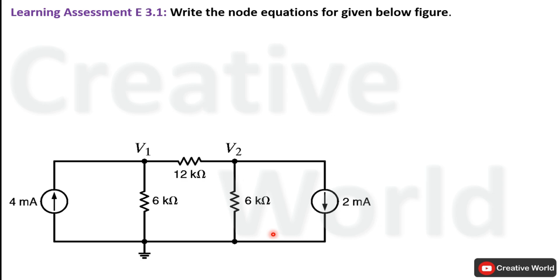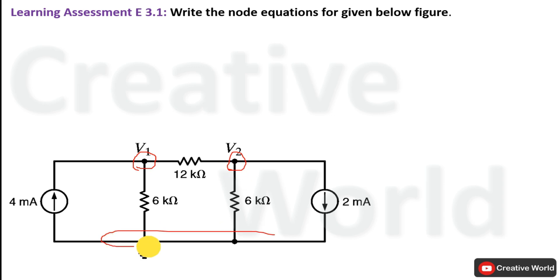Without wasting time let's proceed towards the solution. First of all, if we observe, this circuit contains 3 nodes. These 3 nodes are highlighted, and one of them is the reference or ground node.